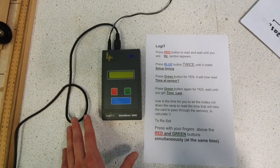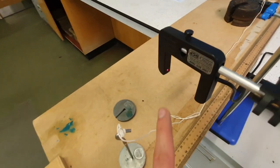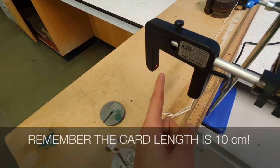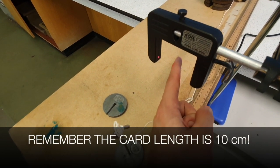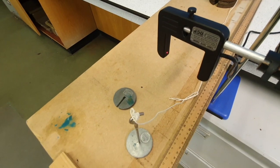This is the light gate, this is a close-up, so you know this is where the card passes through. It starts timing when the card is within the light and then it stops timing when the card has passed through.